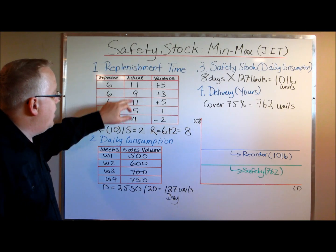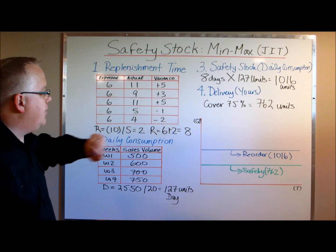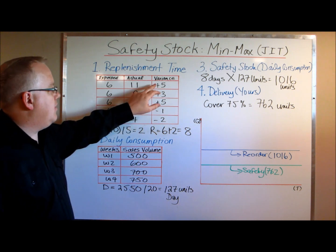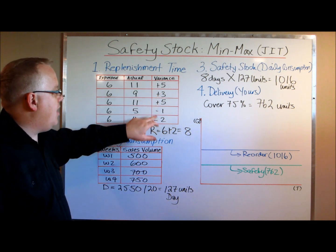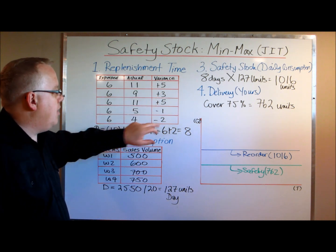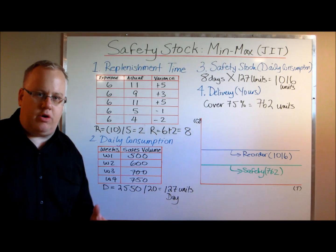The actual replenishment times were 11 days, nine days, 11 days, five days, and four days. The variances are plus five, plus three, plus five, minus one, and minus two. So the last two shipments were actually early.